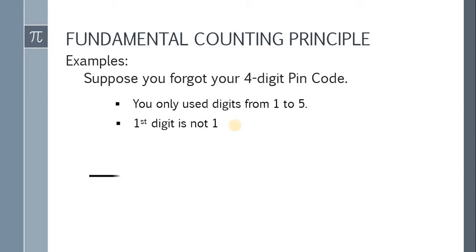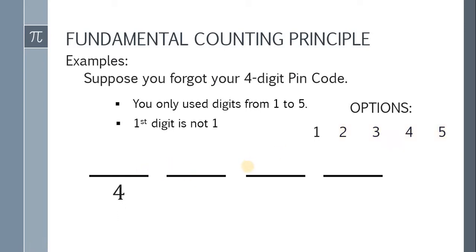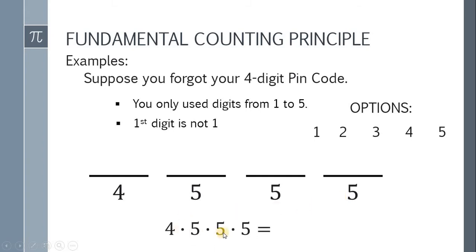So we have 4 digits in our PIN code and our options are digits 1 to 5. For the first digit, since it's not 1, the options are 2, 3, 4, and 5 — so 4 options. For the second digit, there's no restriction, so all 5 digits are possible — 5 options. The same applies to the third and fourth digits — 5 options each. According to the fundamental counting principle, the total is 4 times 5 times 5 times 5, which is 500 PIN codes. After trying all 500, one of them will open your phone.